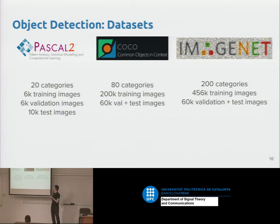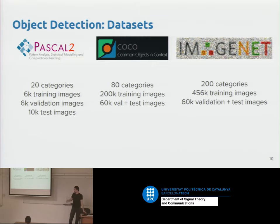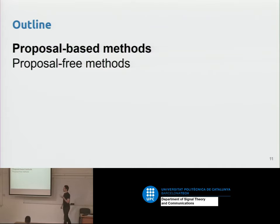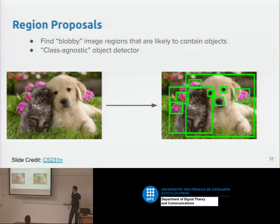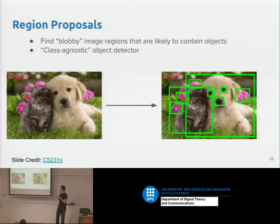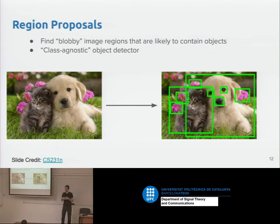Before that, some datasets used for object detection: Pascal, which has 20 categories, and larger datasets like COCO and ImageNet. In object detection we differentiate between two categories: proposal-based methods, which use an algorithm to propose bounding boxes, and proposal-free methods, which don't rely on any such algorithm. The idea for proposal methods is to find blobby regions so we don't have to check all places and aspect ratios — for instance, the dog, the cat, some flowers, but not background patches that only add computation.